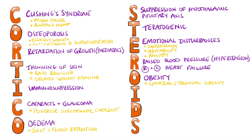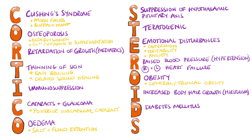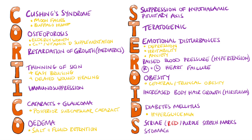I is for an increase in body hair growth known as hirsutism. D stands for diabetes mellitus, because corticosteroids can lead to hyperglycemia. Then we have S which stands for striae — red or purple marks that can be seen on the skin.